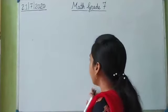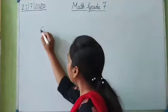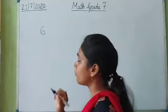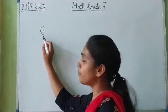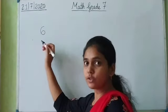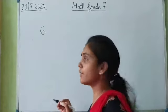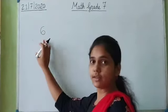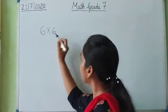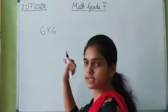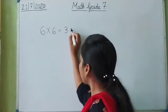So if I take a number 6, and if I have to find its square — finding a square means we have to multiply the given number 2 times. If we are talking about a square, we have to multiply the given number by itself 2 times. So 6 multiplied by 6 is 36.